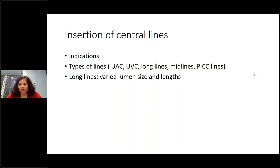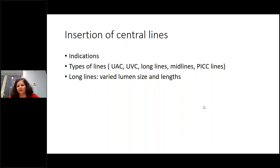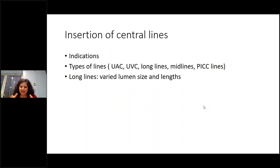Now let's move on to insertion of central lines. There are different types used in neonates: the main ones are UAC, UVC, and long lines. Some units use midlines and some use PICC lines. Lines come in one French, two French, and three French — PICC lines are typically three French. Lengths vary from 20 to 30 to 50 centimetres. Understand what your unit has and what insertion techniques they use, as every unit differs slightly.